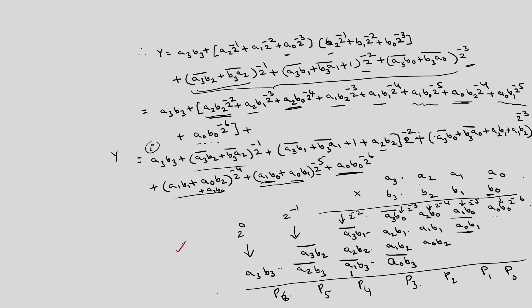In the last lecture, I discussed the Booth multiplier algorithm. Today we will discuss the architecture of the Booth multiplier. Basically, we can implement this Booth multiplier using half adders and full adders. You can see the algorithm which we developed in the last lecture.